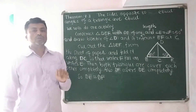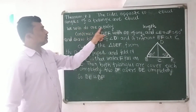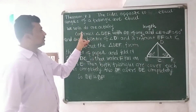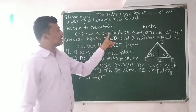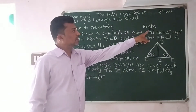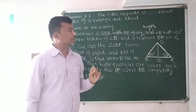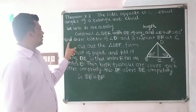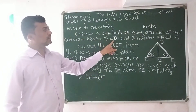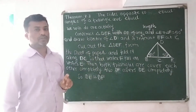For this proof, we will do one activity. Construct triangle DEF with DE of any length, and angle E is equal to angle F is equal to 50 degrees, and draw the bisector of angle D, which intersects EF at point C.